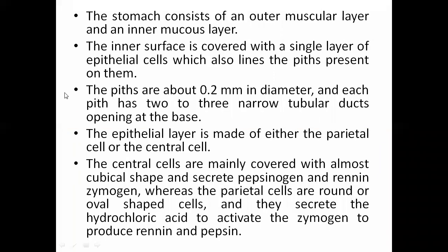The stomach of the pig or other animals consists of an outer muscular layer and an inner mucous layer. The inner surface is covered with a single layer of epithelial cells, which also line the pits present on them. This is similar to the anatomy seen in human stomachs as well.